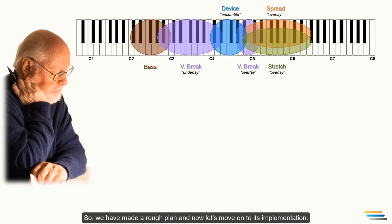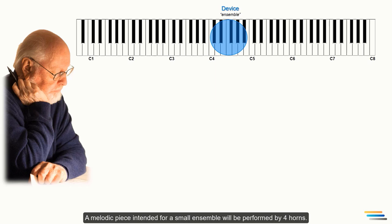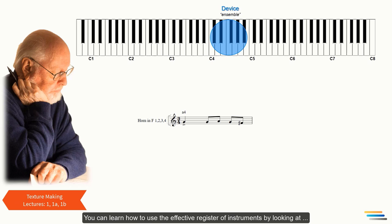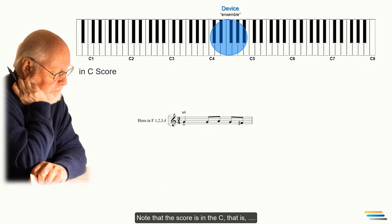A melodic device intended for a small ensemble will be performed by four horns. Of course, this is an option. You can also choose other instruments. You can learn how to use the effective register of instruments by looking at the texture making 1, 1a and 1b lectures. Note that the score is in C. That is, the instruments are written as they sound, except for the piccolo, contrabass, and contrabassoon.